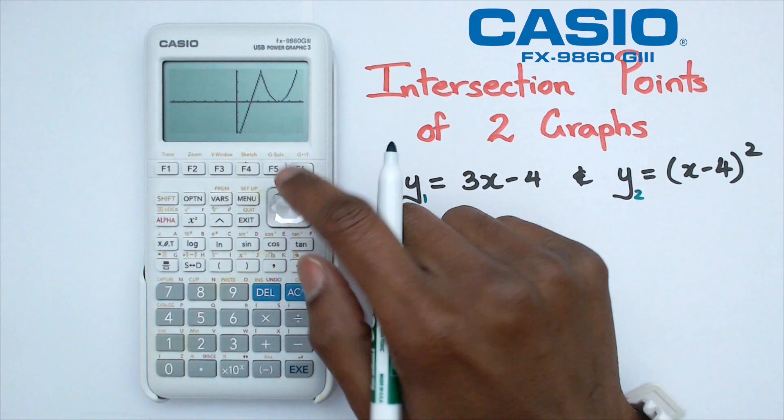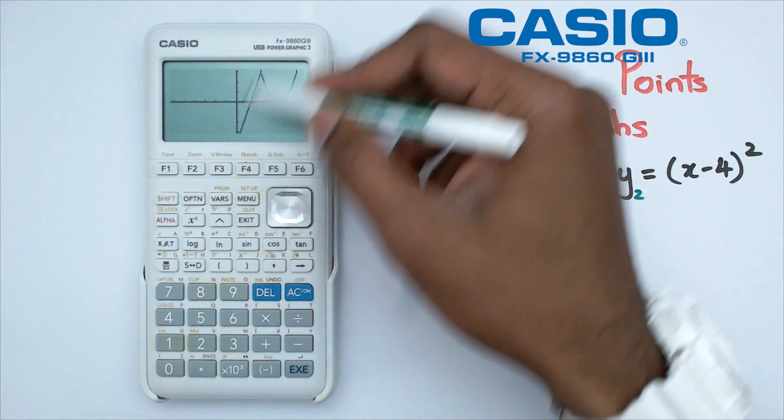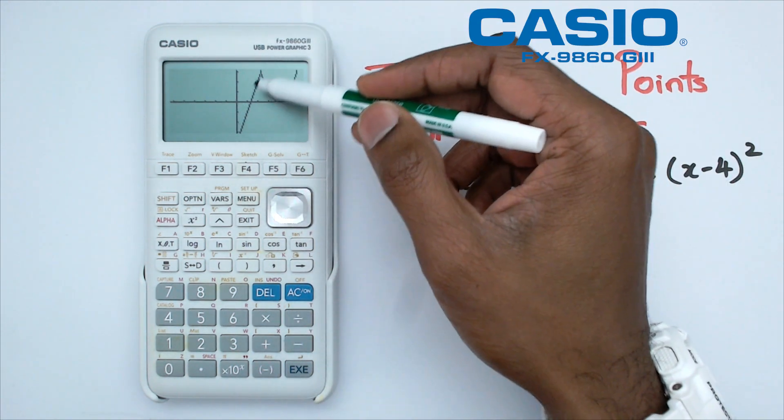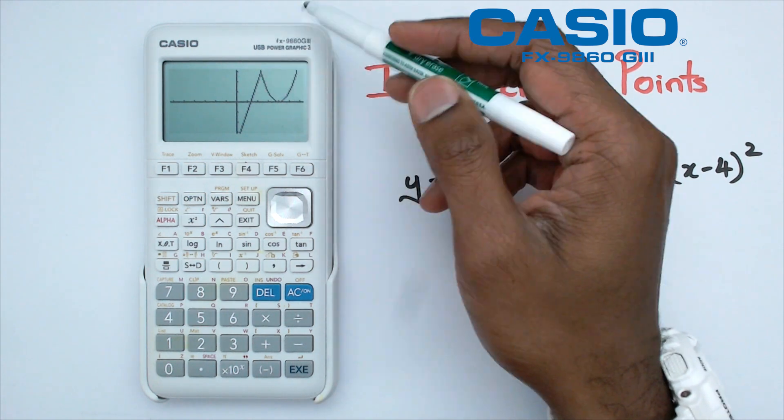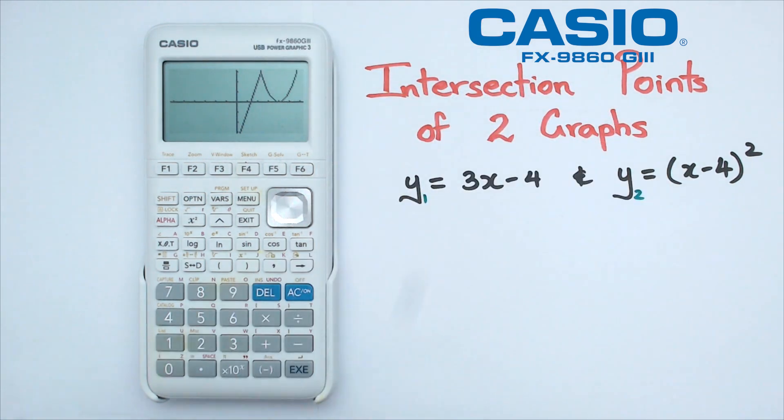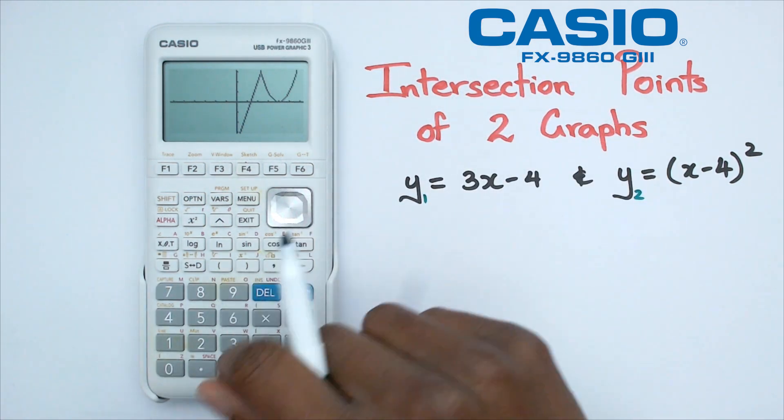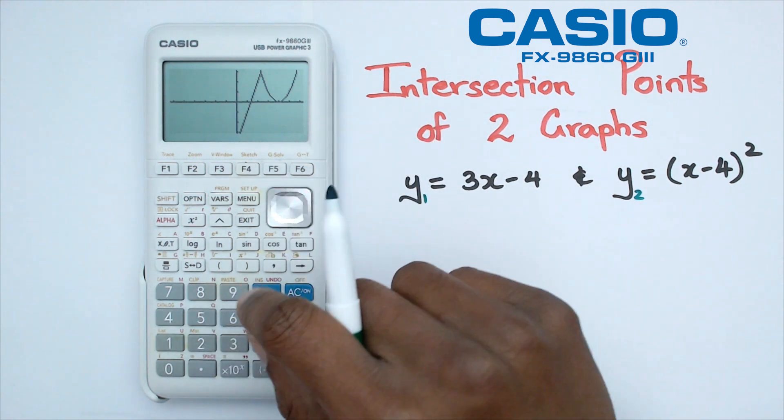Now what's happening here is that you've actually got a parabola and you've got a straight line. Now I know for a fact that this straight line is actually going to intercept the parabola at two different points. So what we need to do is figure out what those two intersection points are.